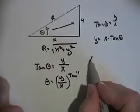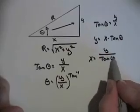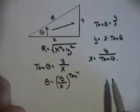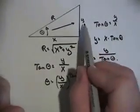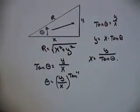And conversely, X is equal to Y divided by the tangent of the angle. So given X and Y, you can find both the hypotenuse and the angle itself.